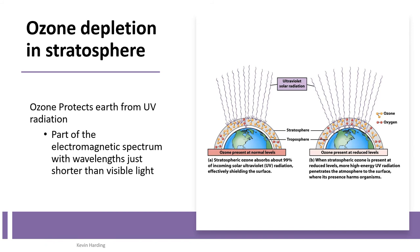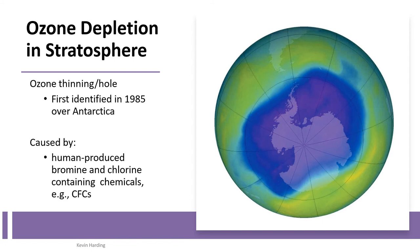The ozone layer: in the stratosphere, ozone is beneficial because it blocks ultraviolet radiation from the sun. When there is less ozone — i.e., a hole in the ozone layer — UV radiation passes straight through to the Earth's surface. This means more harmful UV radiation reaches us, and the hole was first identified in 1985 over the Antarctic.